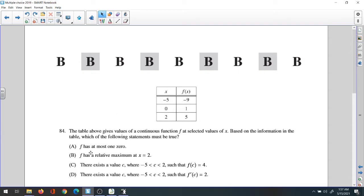Option A: f has at most one zero. That's incorrect. The intermediate value theorem guarantees us to have at least one zero, but it could have more.